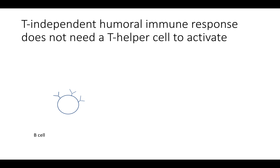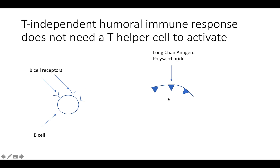Here we have a B-cell, and on that B-cell surface there are multiple B-cell receptors. Those B-cell receptors have variable regions that recognize one specific type of antigen, such as this polysaccharide.